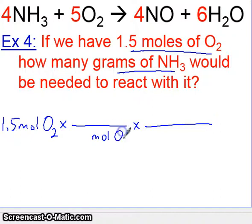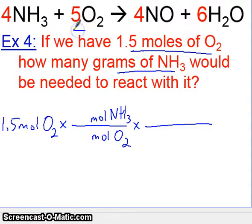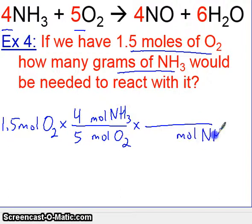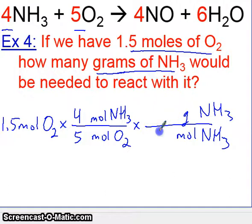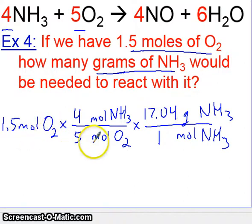We have to put moles of O2 on the bottom, then moles of NH3 — the substance we're converting to. We're going from moles of O2 to moles of NH3. The relationship is five to four: five moles of O2 for every four moles of NH3. Any time you go from moles to moles, you have to use the coefficients from the balanced equation. For the second step, since we have moles of NH3, we put moles of NH3 at the bottom and grams of NH3 on top. The relationship between moles and grams comes from the periodic table — one mole is 17.04 grams. Notice we flipped it: we began with moles, then converted to moles, and then to grams.